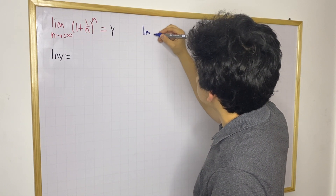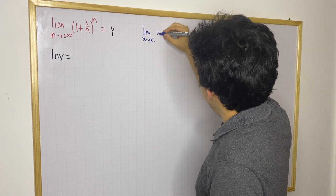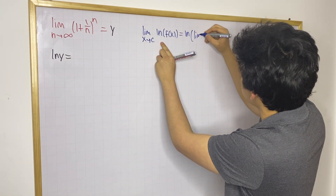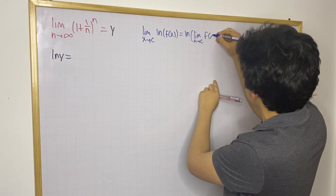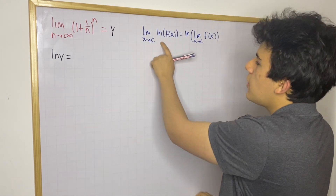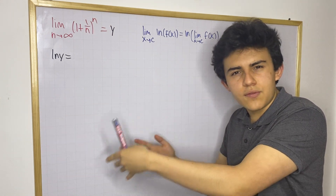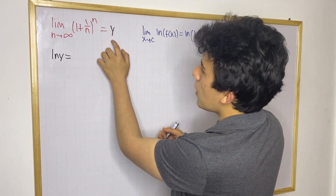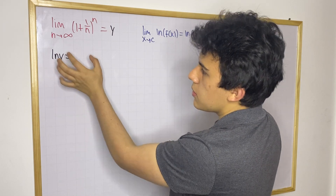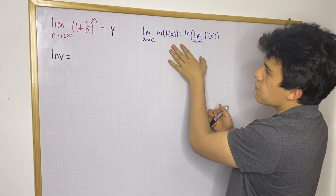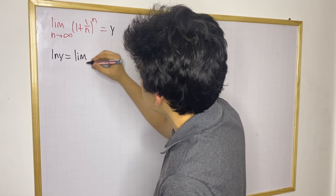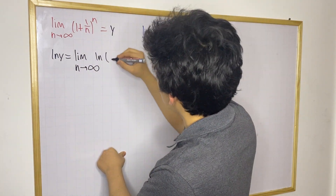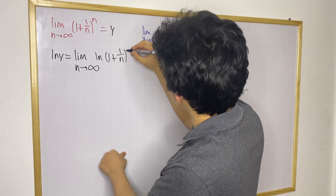When you have the limit as x approaches any number c of the natural log of f(x), this is equal to taking the natural log outside the limit. This is a property that is very important: the limit of the log equals the log of the limit. So if we know that y equals the limit, then ln(y) equals the natural log of this limit, and by this property that equals the limit as n approaches infinity of the natural log of (1 + 1/n)^n.